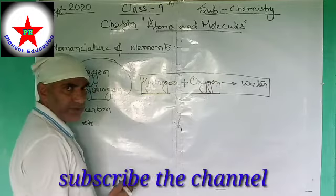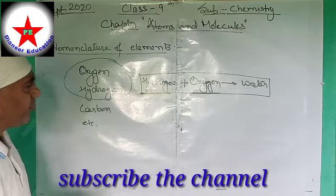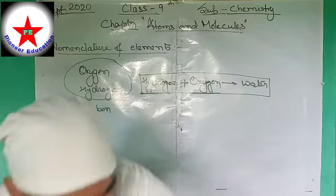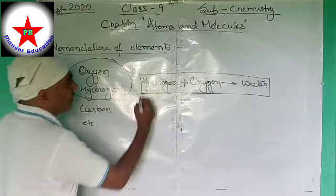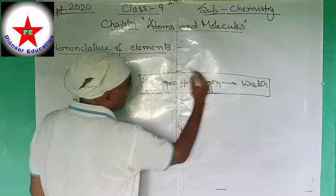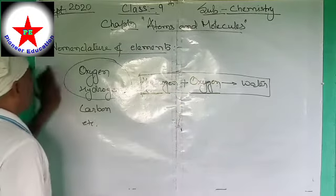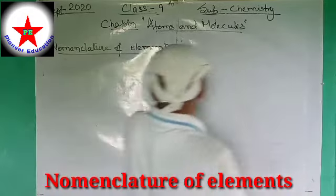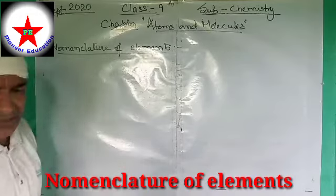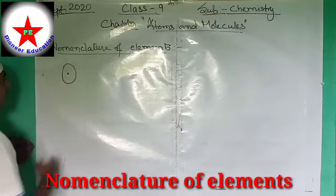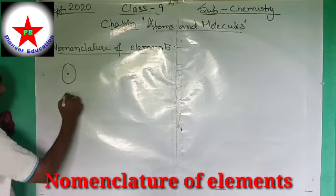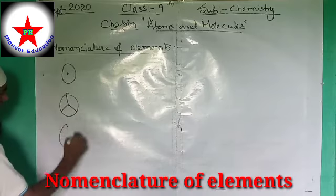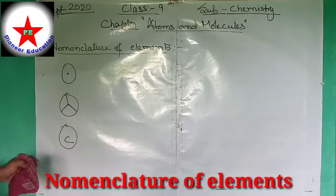So instead of writing the whole name, if symbols are used, it would create great convenience and be comfortable to write. For the first time, Dalton used symbols instead of the names of the elements. According to him, some of the symbols were in the form of figures, such as specific drawn shapes representing each element.